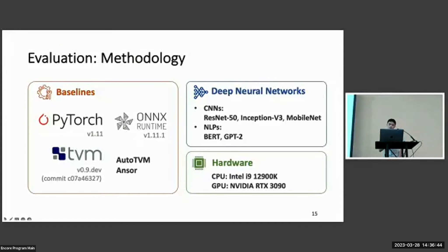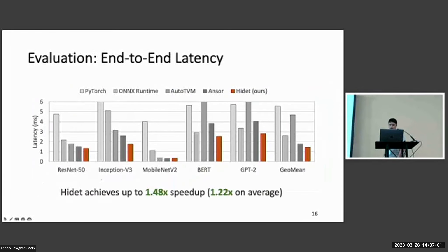We will benchmark these deep learning compilers and libraries on five representative deep neural networks. Three of them are convolution networks, and two of them are NLP models. And we do this experiment on the RTX 3090 GPU.